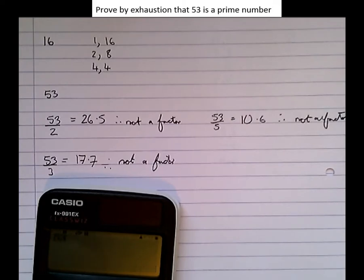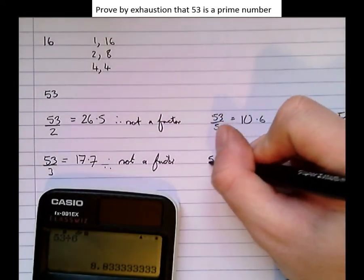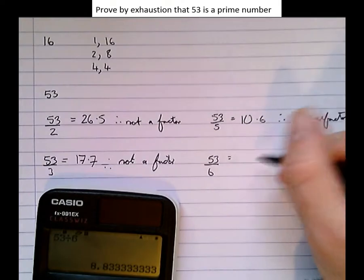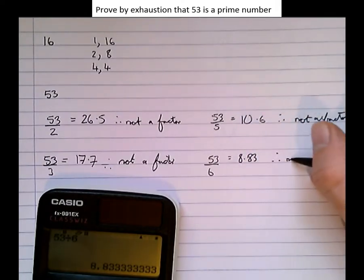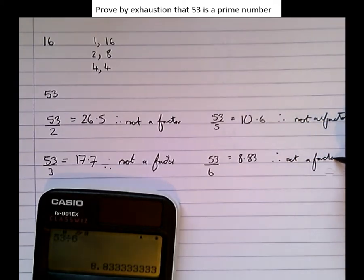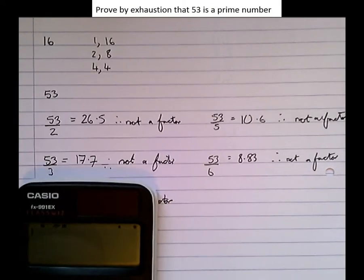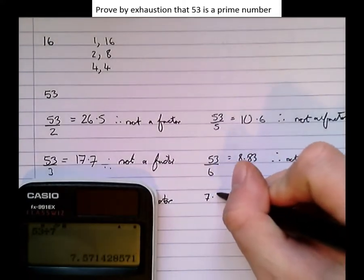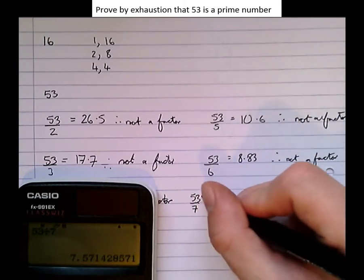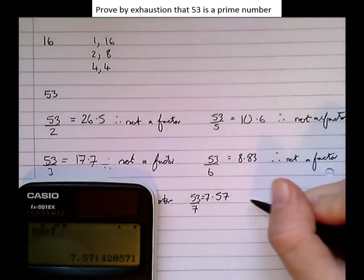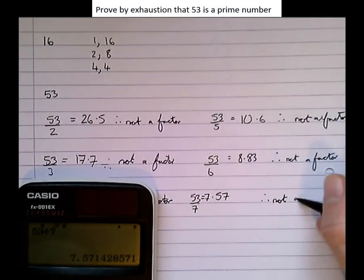53 divided by 6 is 8.8, therefore not a factor. 53 divided by 7 equals 7.57, therefore not a factor.